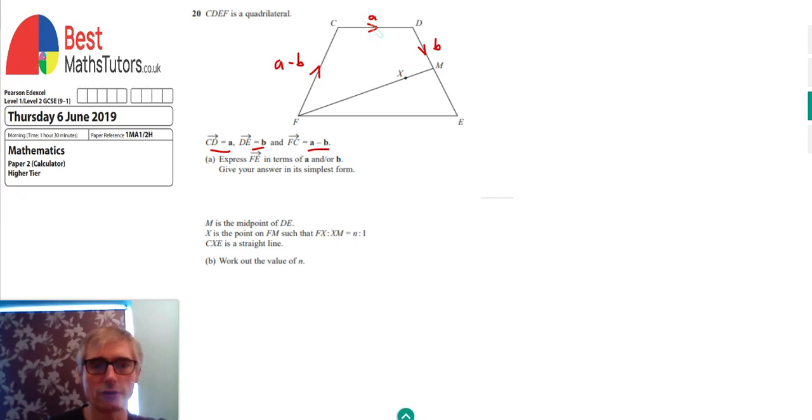The arrows are very important because if we went in the opposite direction, DC would be minus A. The first part is we've got to express FE in terms of A and B. Although this is our line FE, we don't know what it is to go straight across, but we can take any other path that we do know. To get from F to E, we could take an alternative route: FC plus CD plus DE.